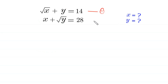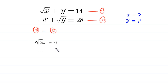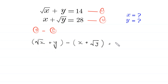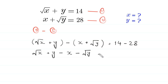Let's call this equation 1 and this equation 2. We subtract equation 2 from equation 1. The left-hand side becomes root x plus y minus x plus root y, equal to 14 minus 28, which is negative 14. Removing brackets, this becomes root x plus y minus x minus root y equals negative 14.